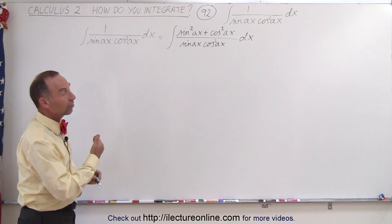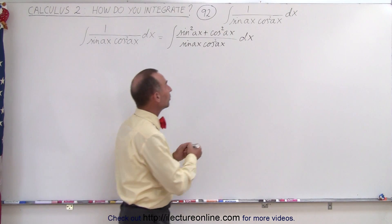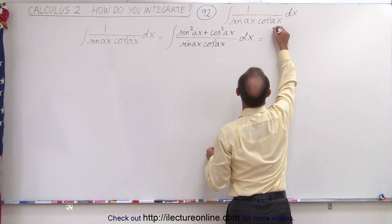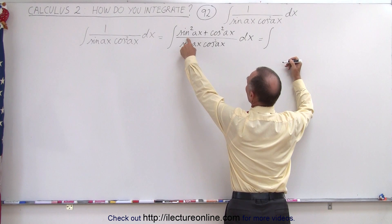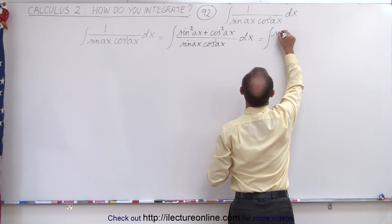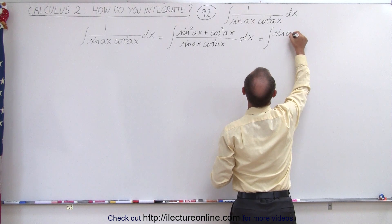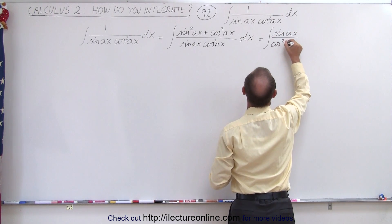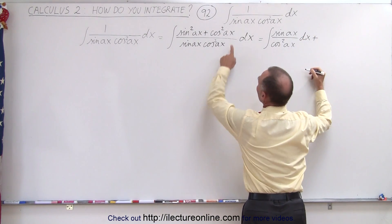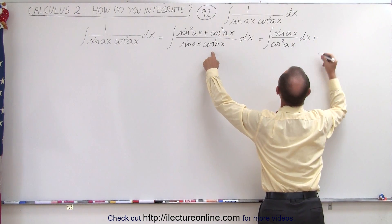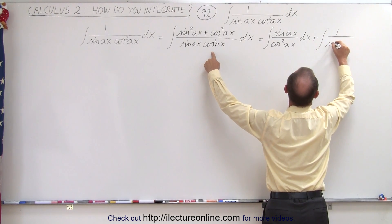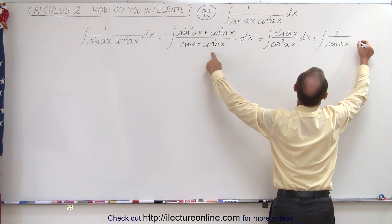With this trick, we can now write this as the sum of two separate integrals. The first integral will have the sine squared divided by this — it cancels out — so we end up with the sine of AX divided by the cosine squared of AX DX, plus the integral of one over the sine of AX DX.